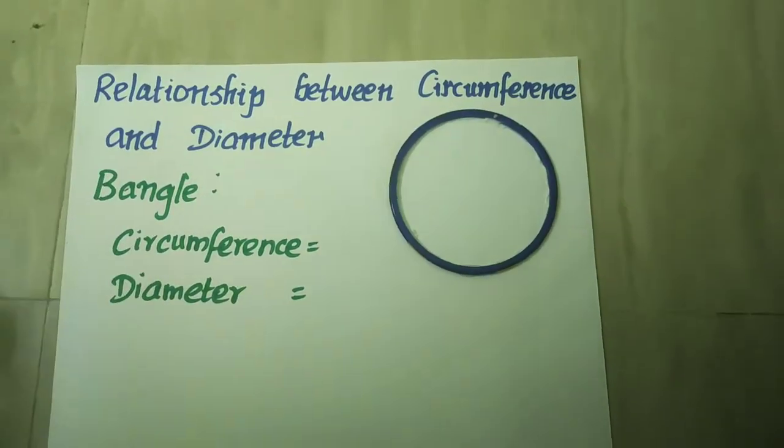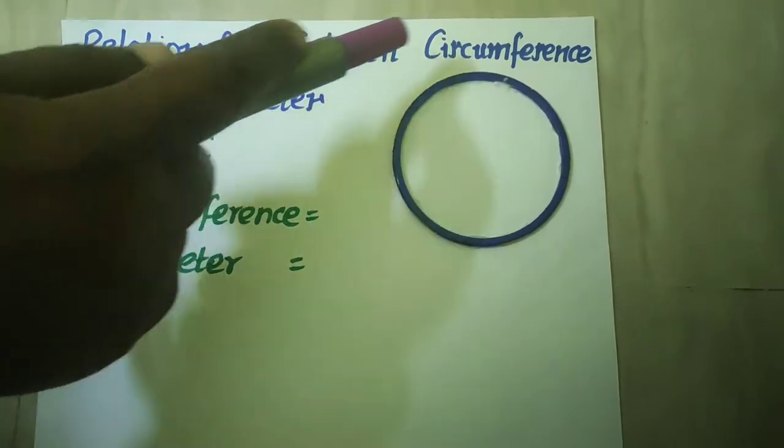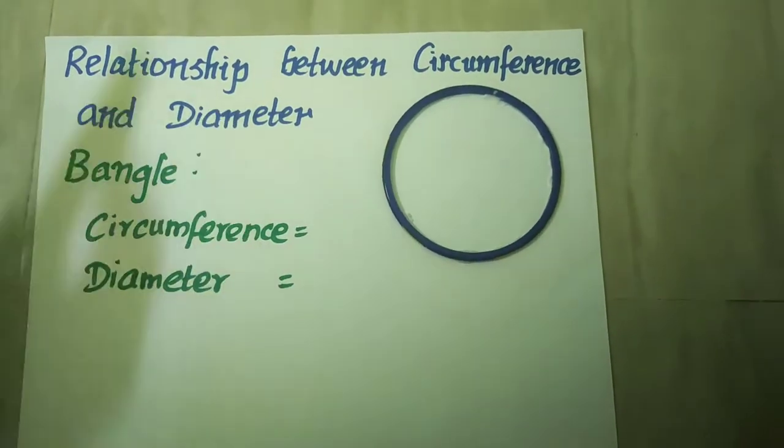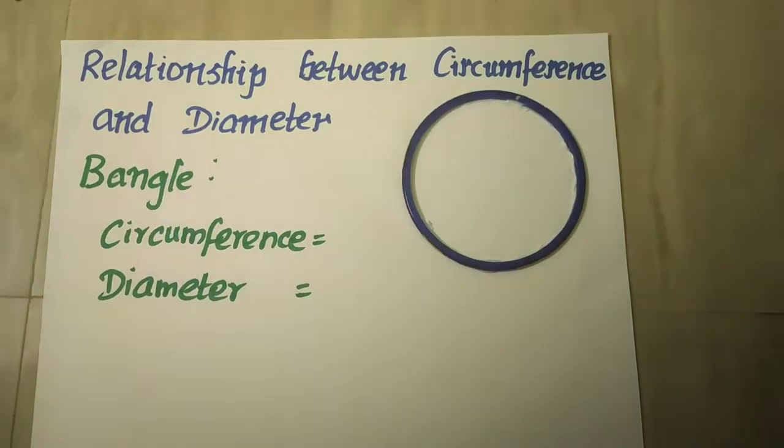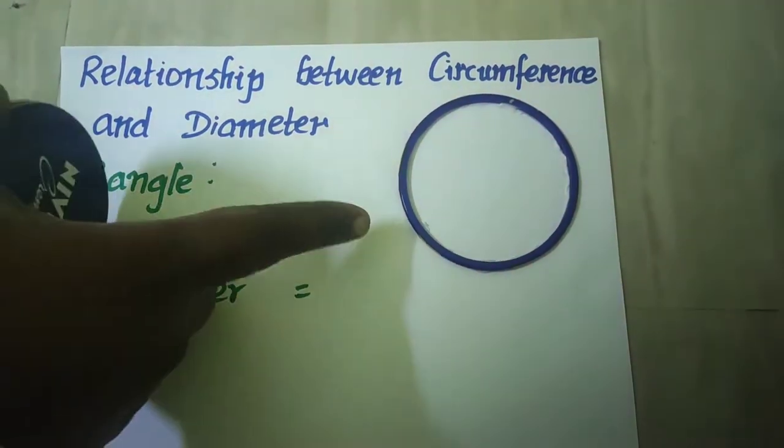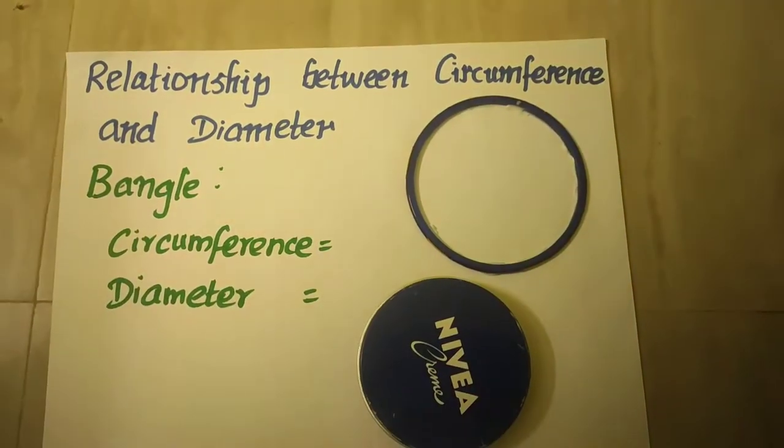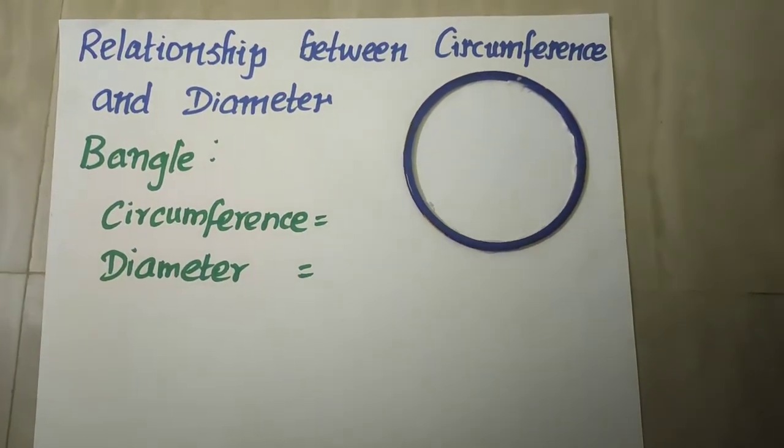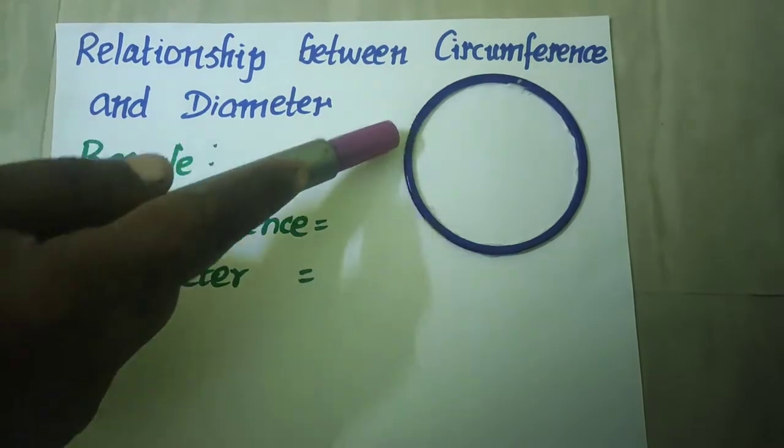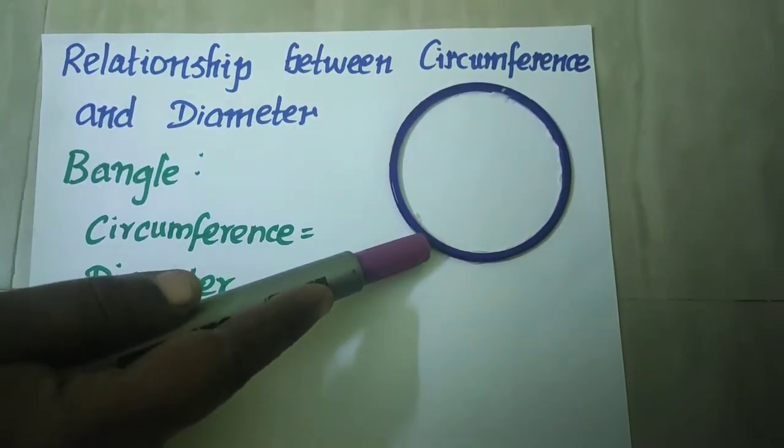Now let us see how to find the relationship between circumference and diameter. For this I am going to use two circular objects, one is a bangle and the other one is a metal box. First let us take the bangle. We know that bangle is in the shape of a circle.